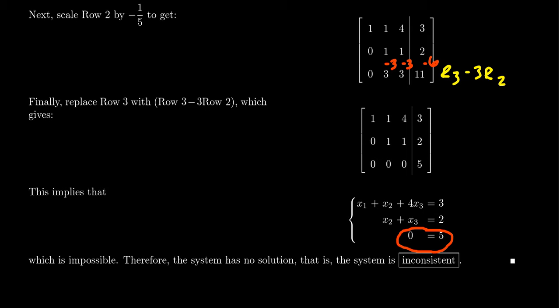Look at that last equation: 0 = 5. This is a contradiction — there is no choice of x1, x2, and x3 that makes it true. We're working over the real numbers, and 0 does not equal 5 over the reals. Since it's impossible to satisfy this system, there is no solution — this is what we previously called an inconsistent system.